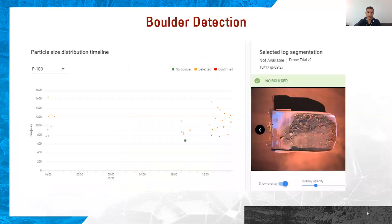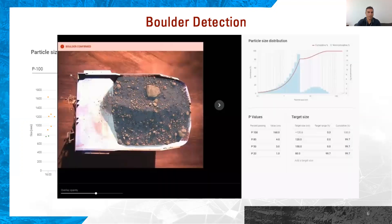For boulder detection, every data point is shown on our particle size distribution timeline. If there is no boulder on the truck, it is visualized as a green dot. If there is a boulder on the truck, it is shown as a red dot, and dispatch would get a notification.